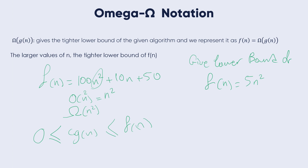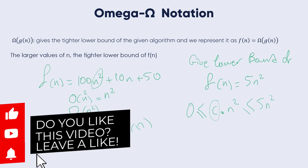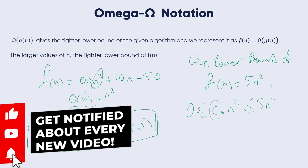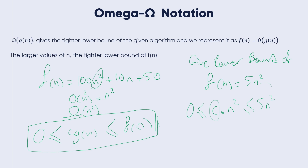For the lower bound, there exist c and n₀ such that 0 ≤ c·n² ≤ 5n². So there exist n₀ = 0 and c such that c·n² ≤ 5n² ≤ f(n). This is the formula we use to find the lower bound. From c·n² ≤ 5n², we get c = 5 and n₀ = 1. So the Omega notation of this function is n².